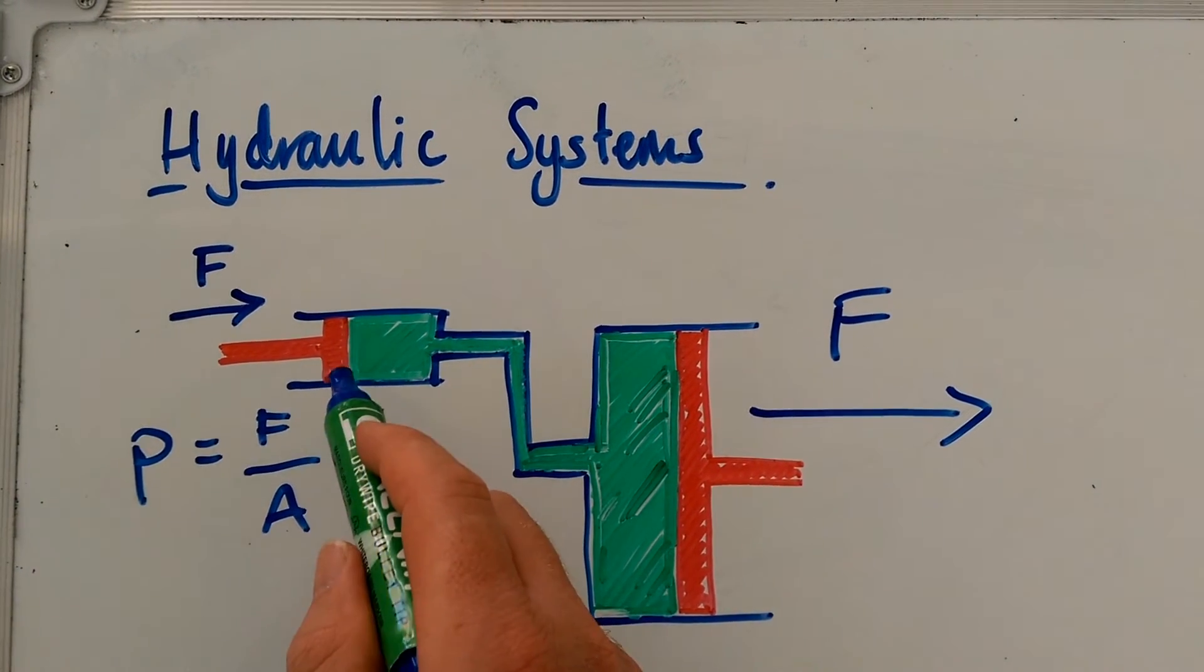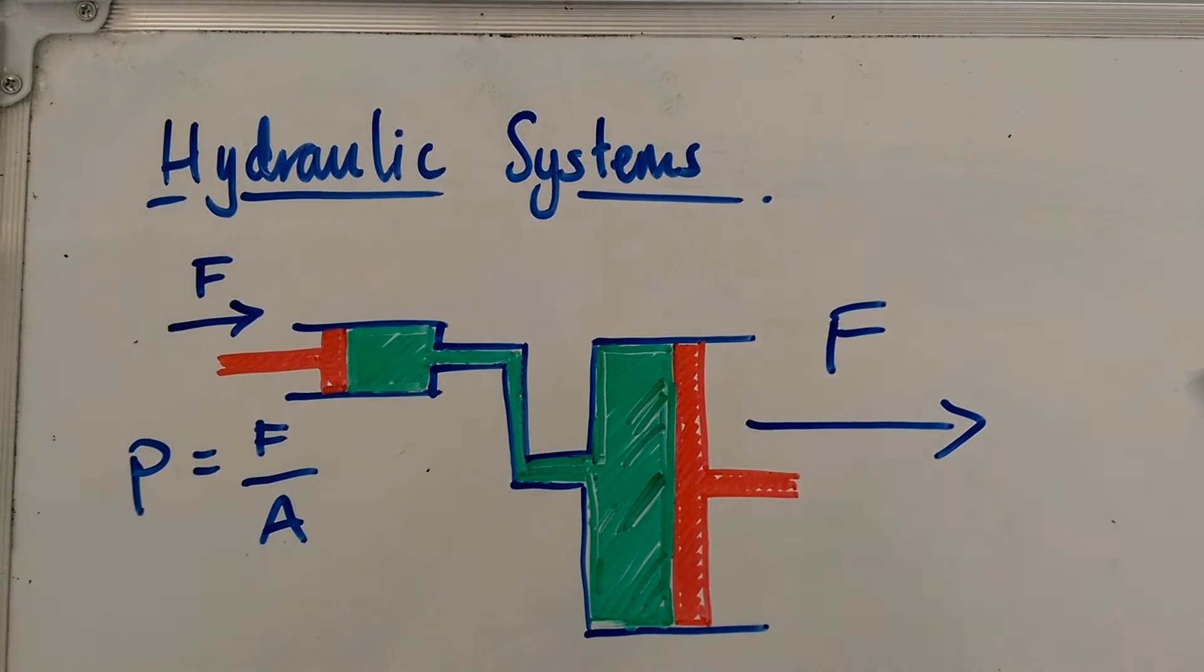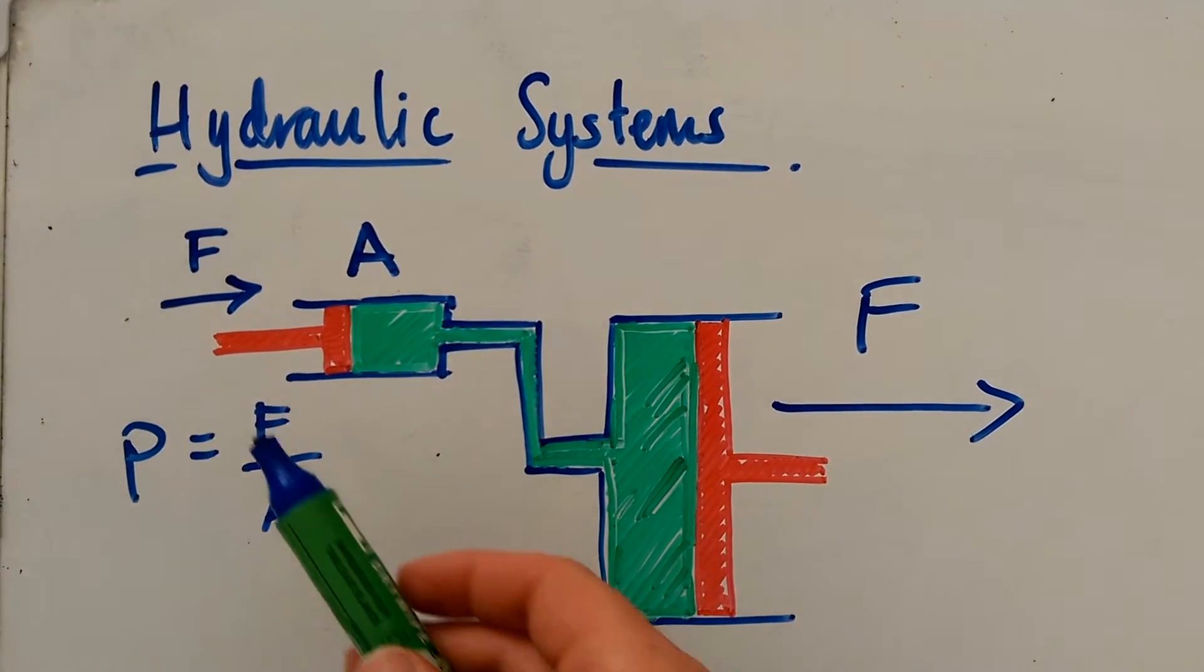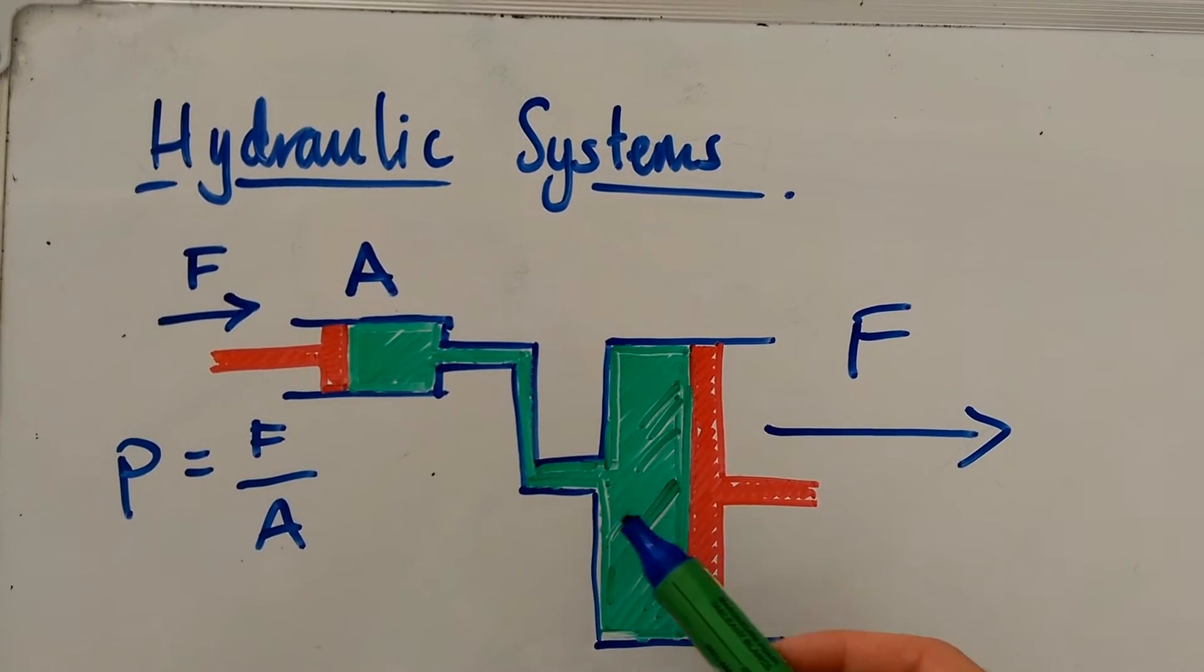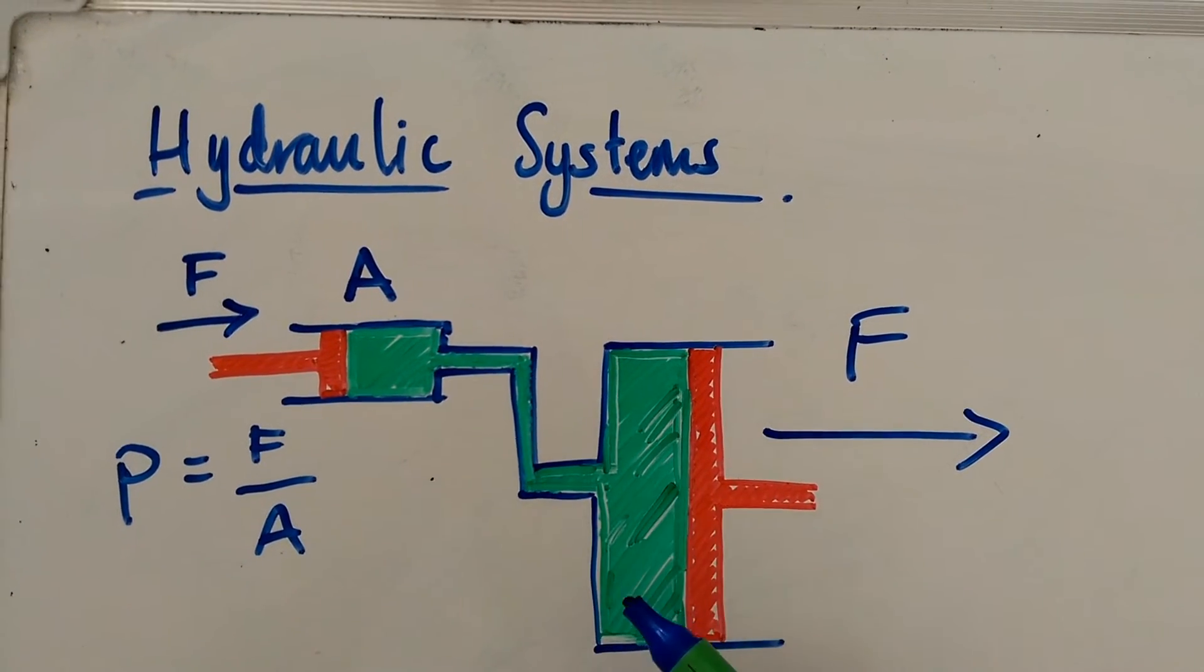where the area is the area of this piston here. So if we know what force we're putting in and what the area of this first piston is, we can work out the pressure in this entire fluid here.